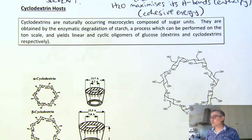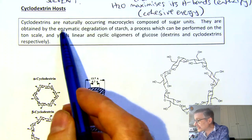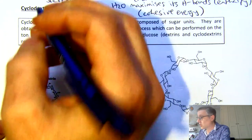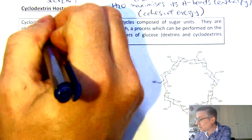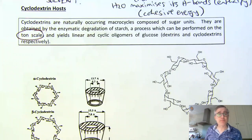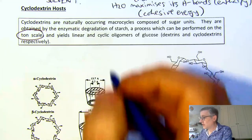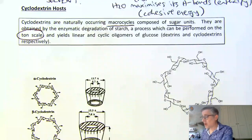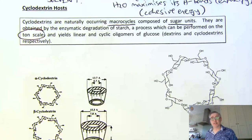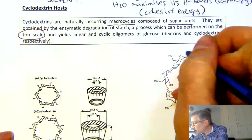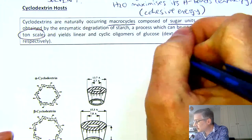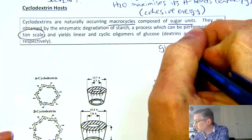These molecules are made by the enzymatic degradation of starch. You can make them on the ton scale. The name cyclodextrin means it's a macrocycle composed of sugar units, and the sugar it's composed of here is glucose.